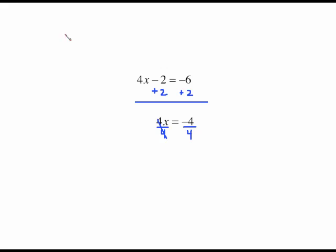These 4s will cancel and you're left with x equals negative 1. Let's plug negative 1 in for that x and do the check. And we have 4 times negative 1 minus 2. We want to know does it really equal negative 6. 4 times negative 1 is negative 4. Negative 4 minus 2 is negative 6. This checks so we know that we're correct.